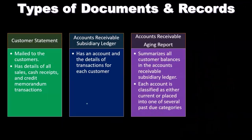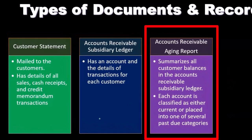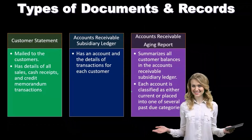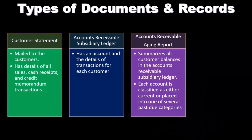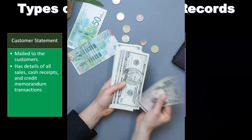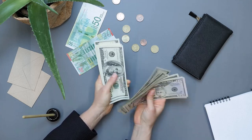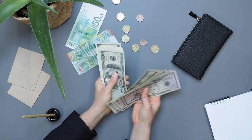The accounts receivable aging report summarizes all customer balances in the accounts receivable subsidiary ledger. Each account is classified as either current or placed into one of several past due categories. So we break out accounts receivable by customer via the subsidiary ledger, and also by an aging report that shows who owes us money and how old or past due that money is - whether it's current, 30 days past due, or 90 days past due.